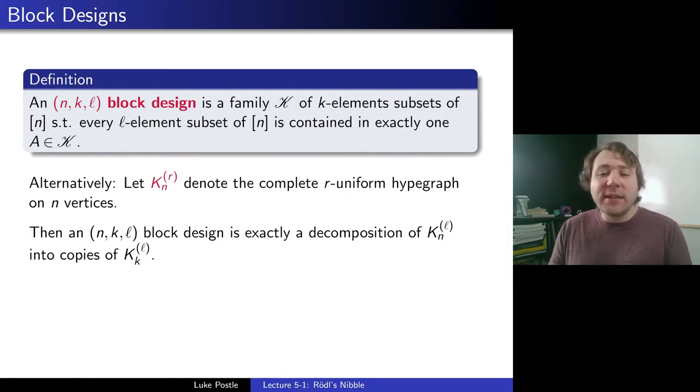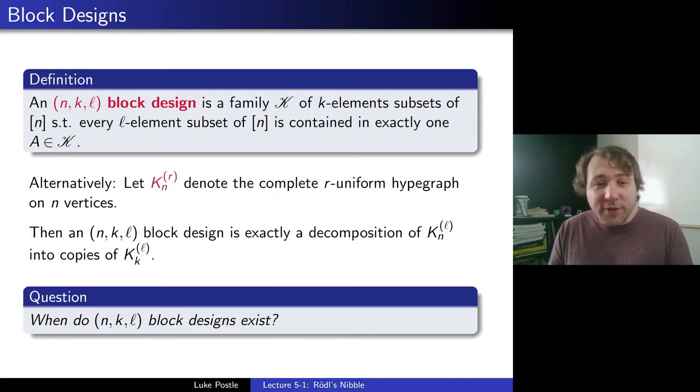So when can we decompose complete hypergraphs into smaller complete uniform hypergraphs? That is exactly the question that has been asked: when do these (n,k,ℓ) block designs exist? So a very natural object, under what conditions do these designs, do these decompositions actually exist?